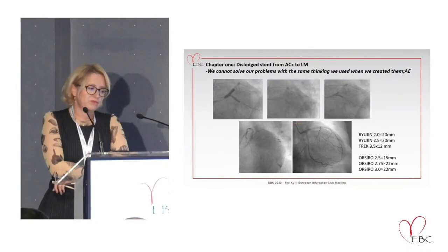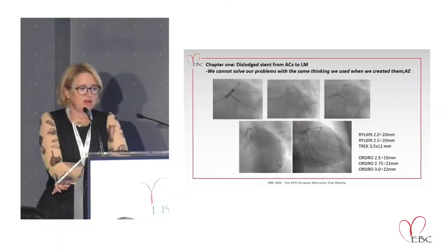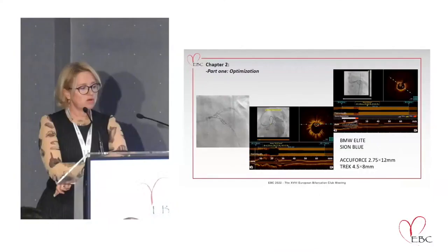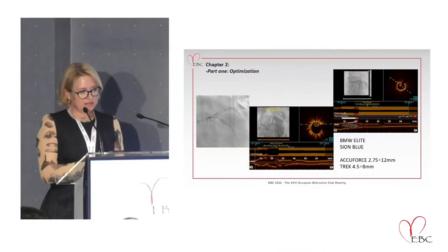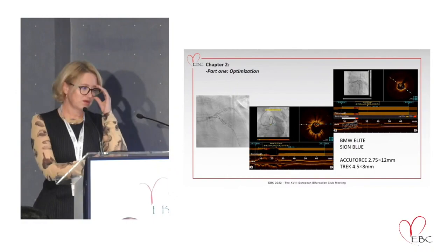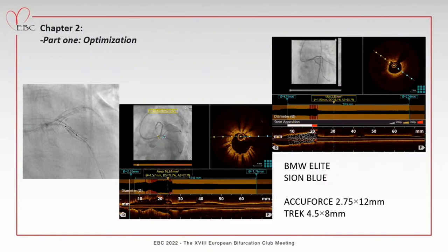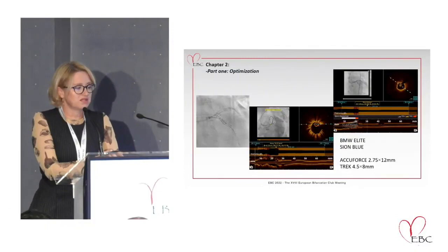She had become uncomfortable at the table, so the plan was to send her to the CCU and then bring her back for optimization. That is Chapter Two - optimization. About three to four weeks later she came back to the cath lab. As you can see, the stent in the circumflex was not very well expanded, nor was the stent in the LAD, but the dislodged stent was completely covered by stents.